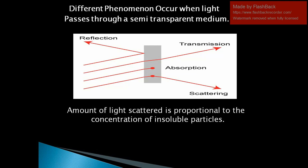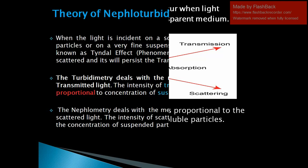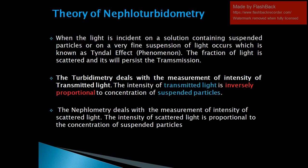The amount of light scattered is proportional to the concentration of insoluble particles. It means that as the number of particles in the sample solution increases, the amount of scattering will increase. Now let's see the theory of nephroturbitometry.